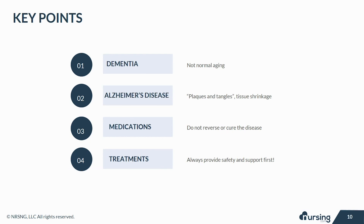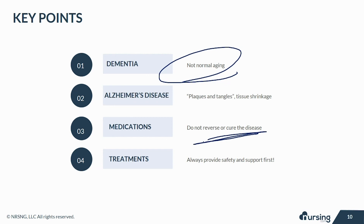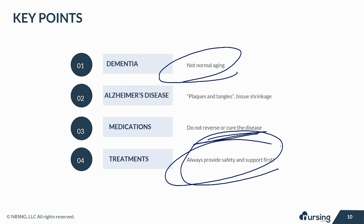Let's review some key points. Dementia is an umbrella term for a group of diseases that occur from abnormal changes to the brain — it is not a normal part of aging. The hallmarks of Alzheimer's disease are the plaques and tangles and the shrinkage of brain tissue, although these are truly only confirmed at autopsy for a real diagnosis. Medications are not used for reversal of disease or for curative purposes — we are only trying to slow the progression and control behaviors and symptoms. But despite medication, our priority is always to provide safety and support to our patients.